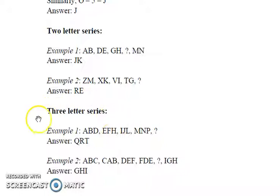Coming to the last part of this video, three letter series. This is similar to the previous two letter series except now we have three letters combined instead of two. In example 1, we see that in the first term, C is missing after A and B.